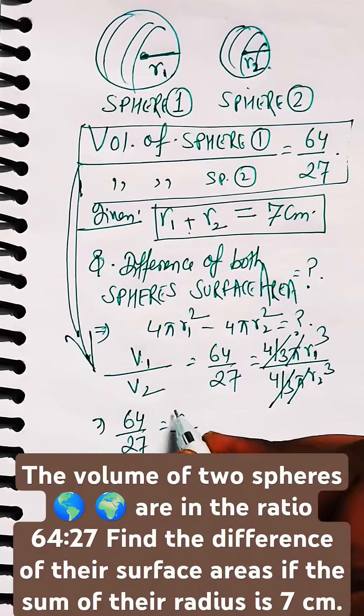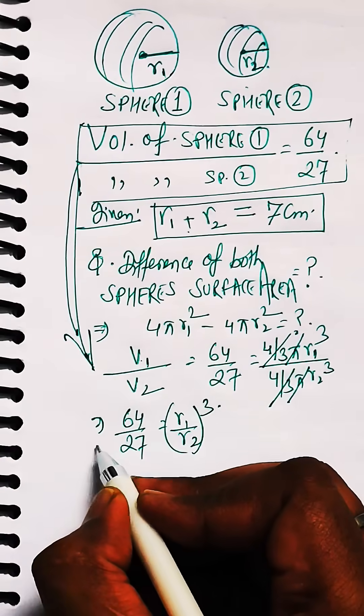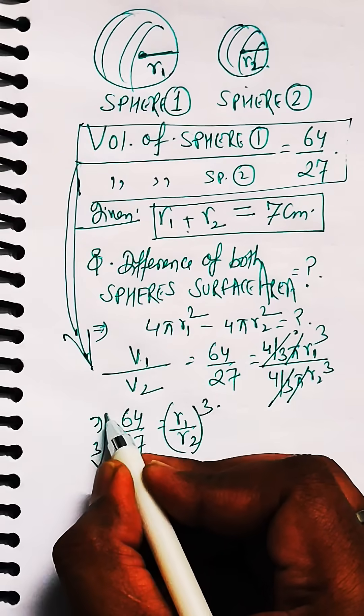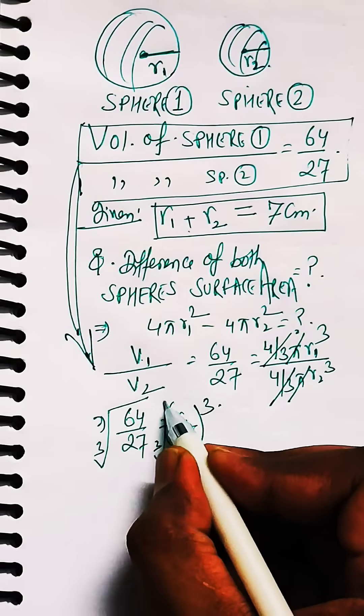And we get the ratio of 64 by 27 as the ratio of r1 by r2 whole cubed. Now take cubic root on both sides of the equation to get the value of r1 by r2.